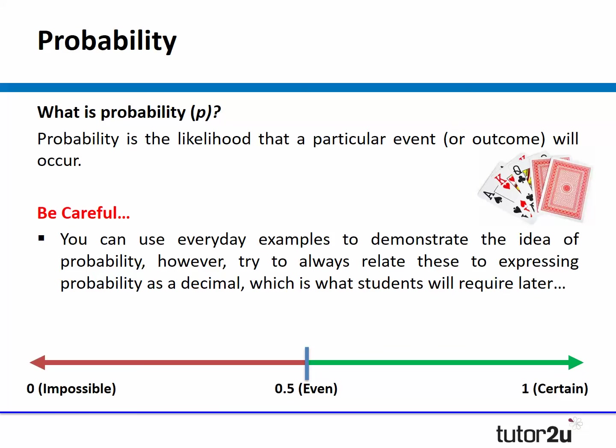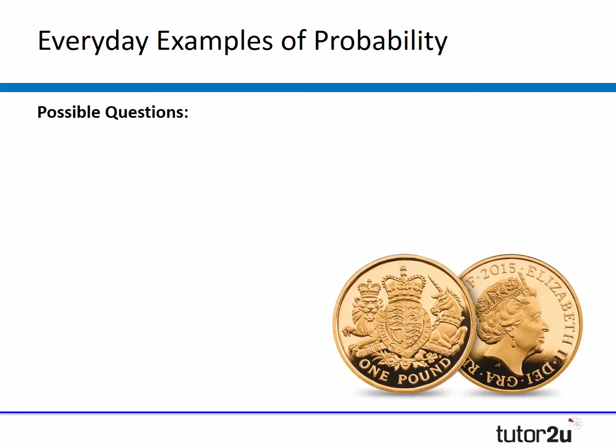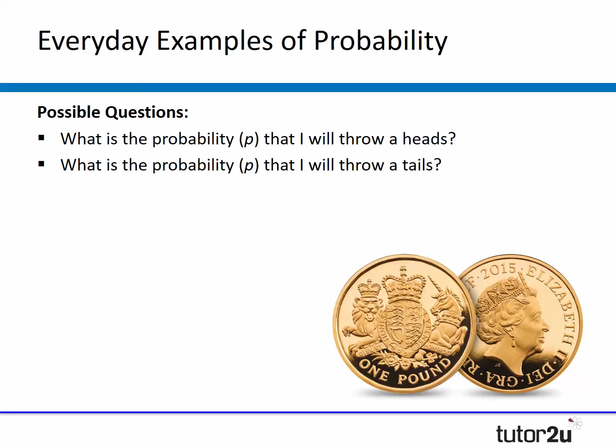One thing to watch out for — and I've seen many teachers do this — is that you can use many everyday examples to demonstrate probability, playing cards being one of them. But you always want to relate that back to getting students to express probability as a decimal. You might give your students coins and ask them to work out the probability of throwing a heads or tails, expressed as 0.5.